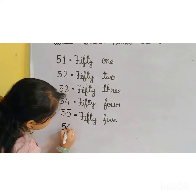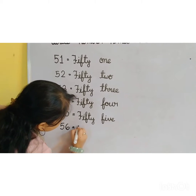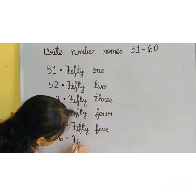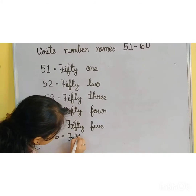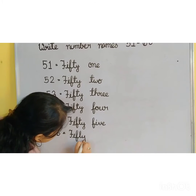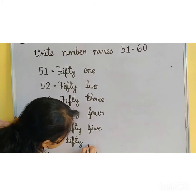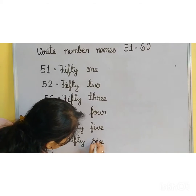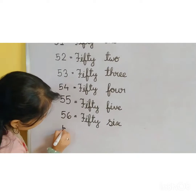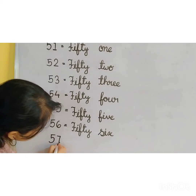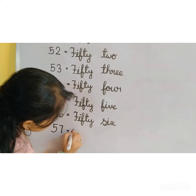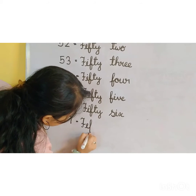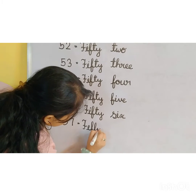5, 6, 56. F-I-F-T-Y, 20. 6, 56. 5, 7, 57. F-I-F-T-Y, 50.